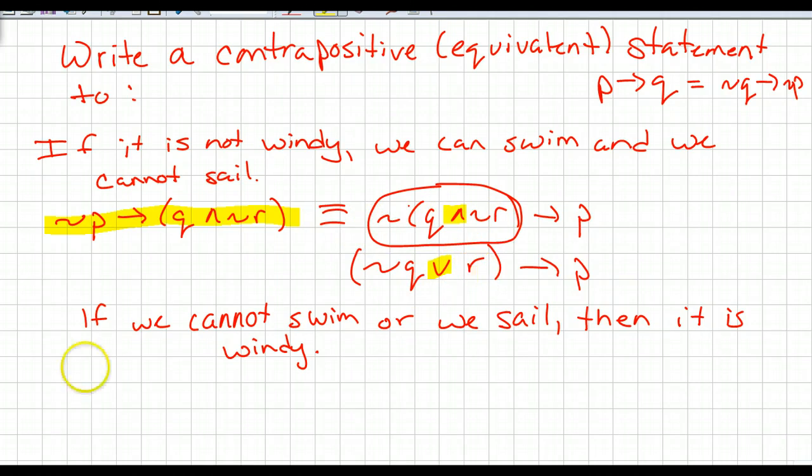So the final statement on this is if we cannot swim or we sail, then it is windy. So that is writing the contrapositive of the first one and if you were to look at the truth tables for both of those, the final column would be exactly the same.